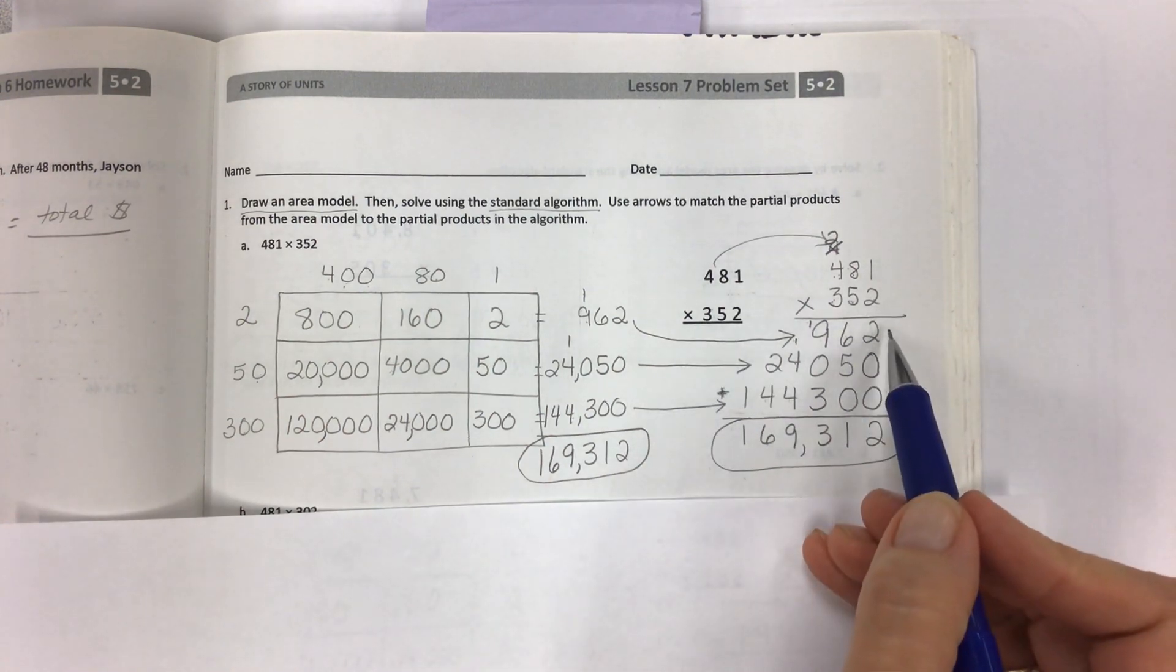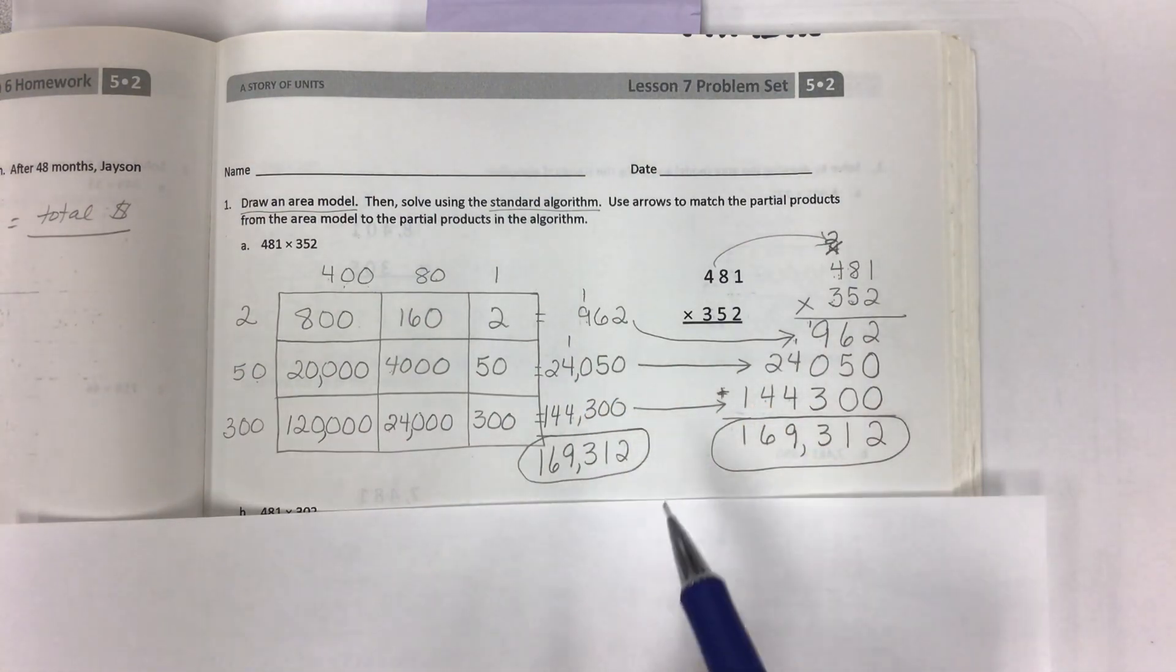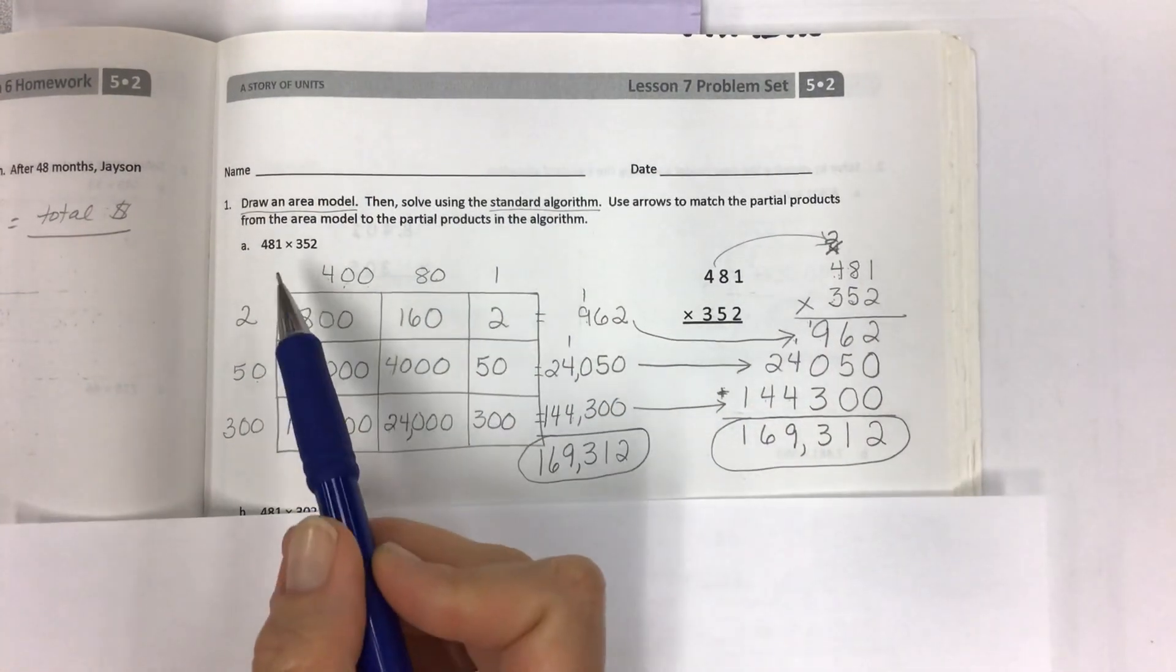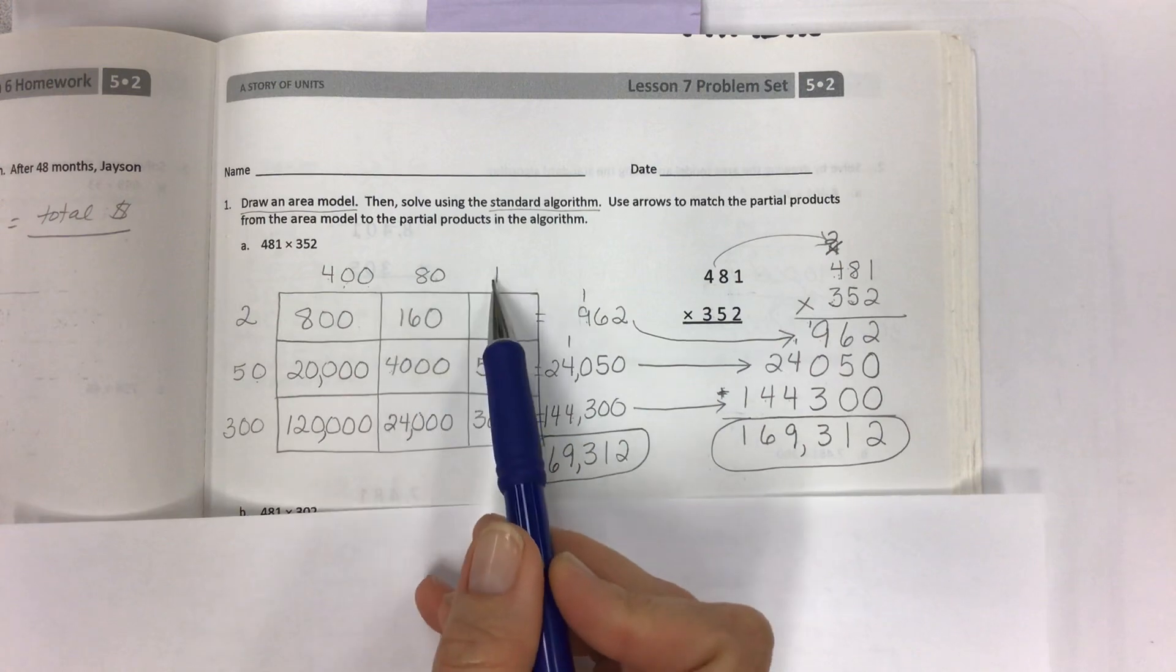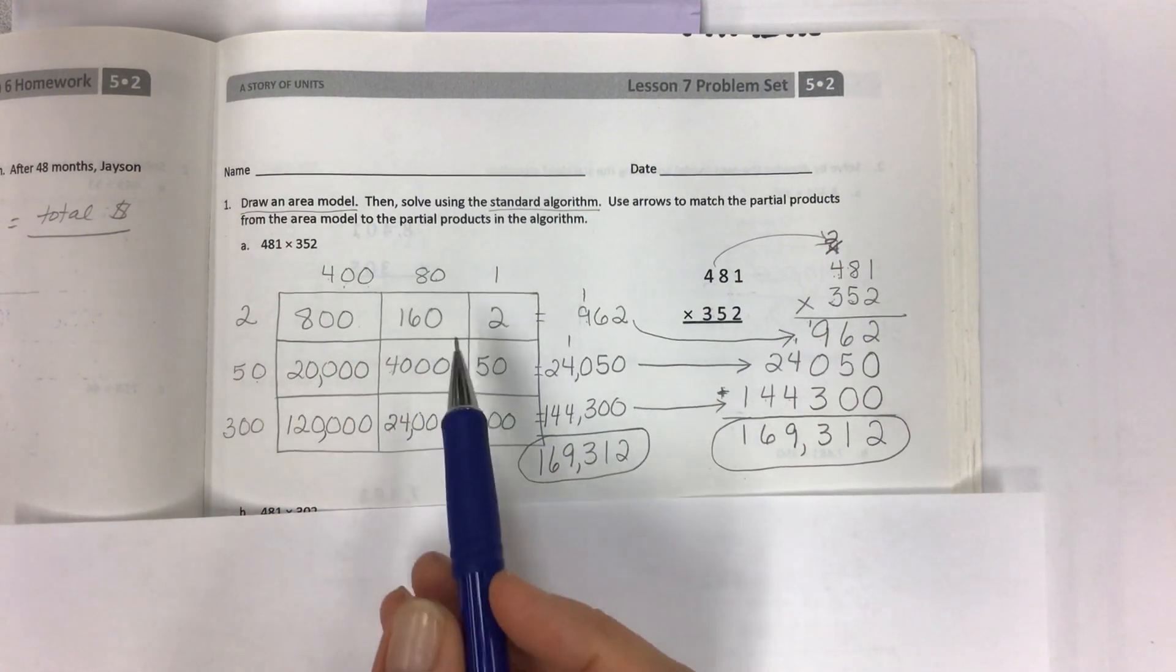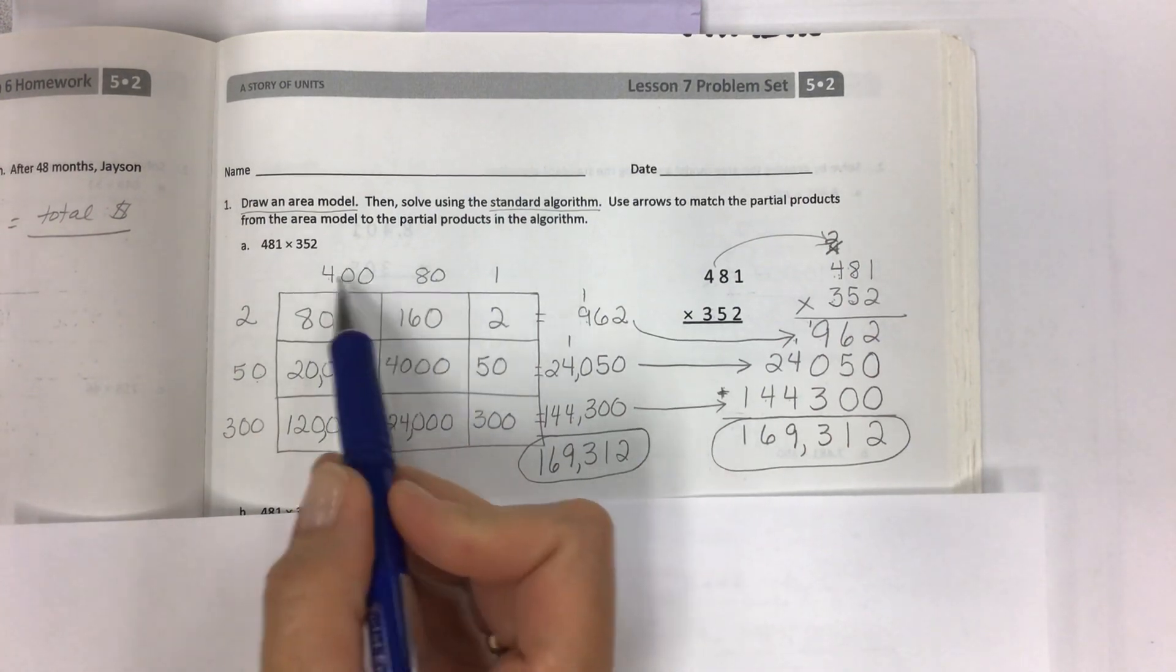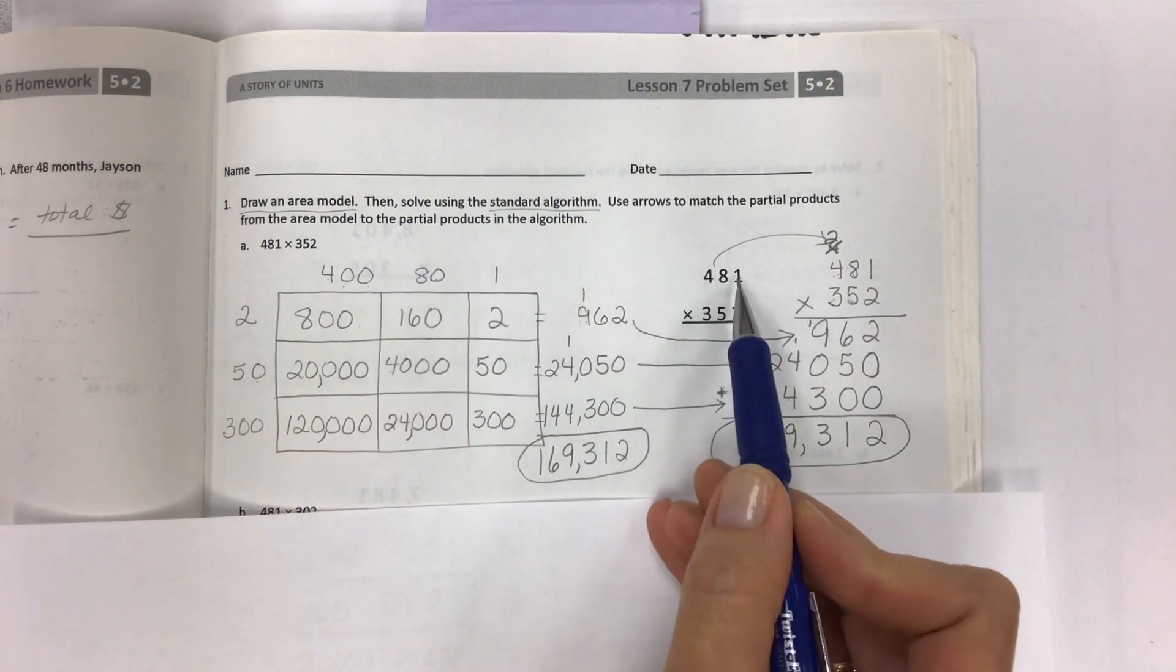So I just moved it over here because it was too squished and I wanted to write nice and big. So set up your 481 on top first factor. It doesn't necessarily matter because of the commutative property as long as whatever number you have on top here is on top here.